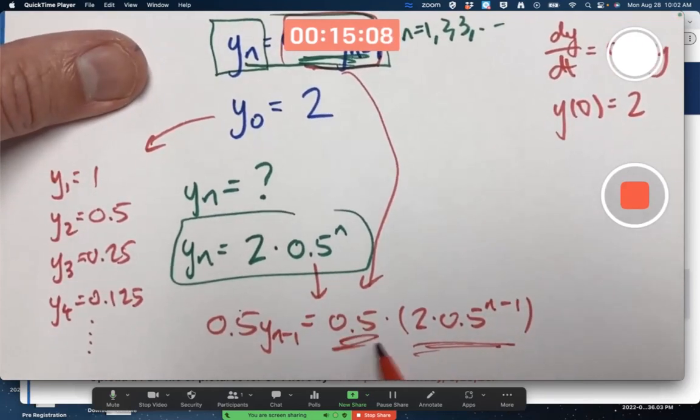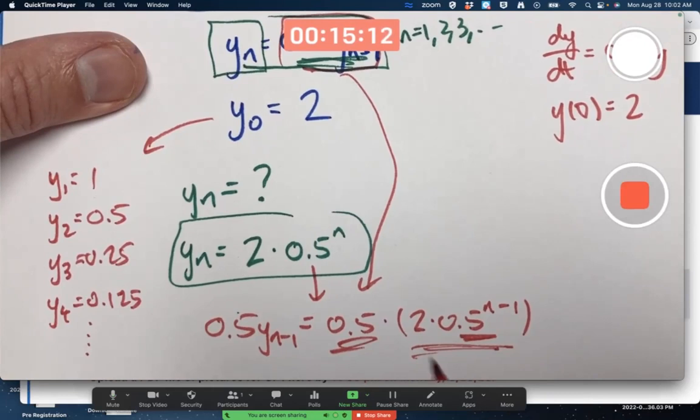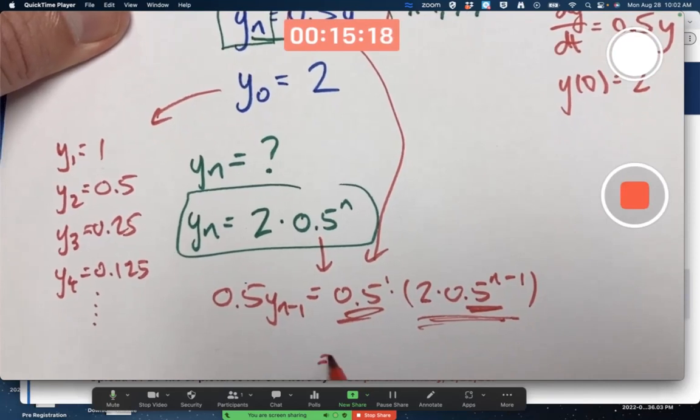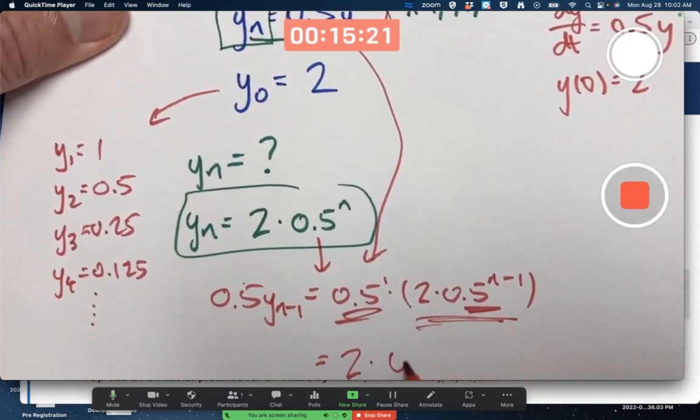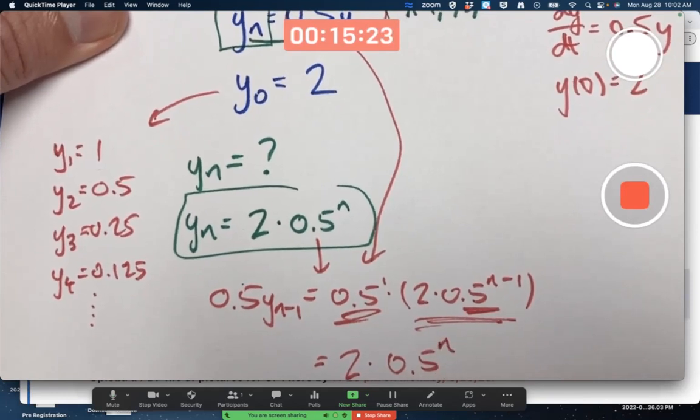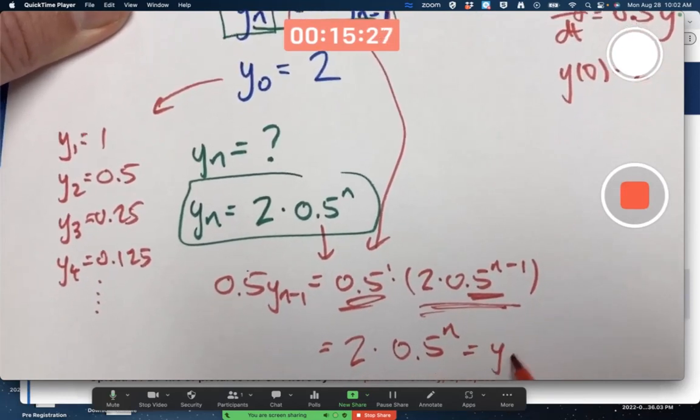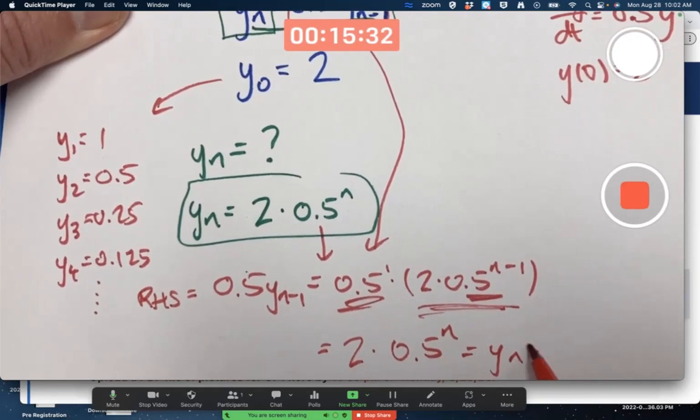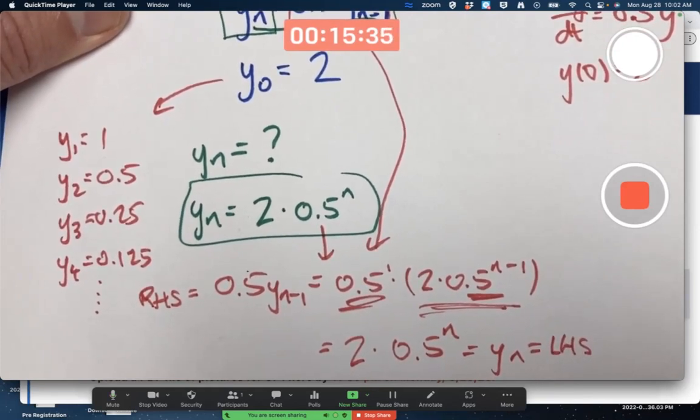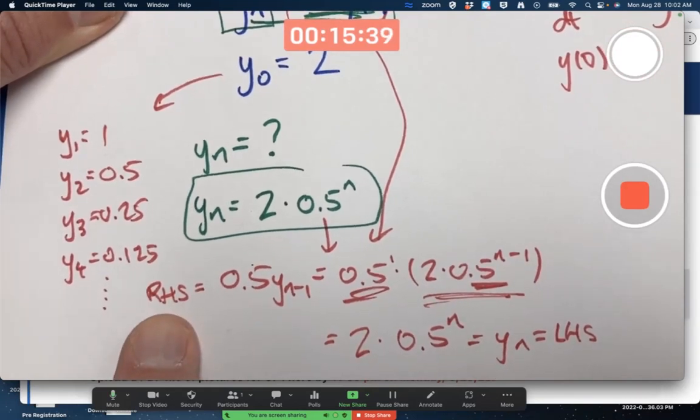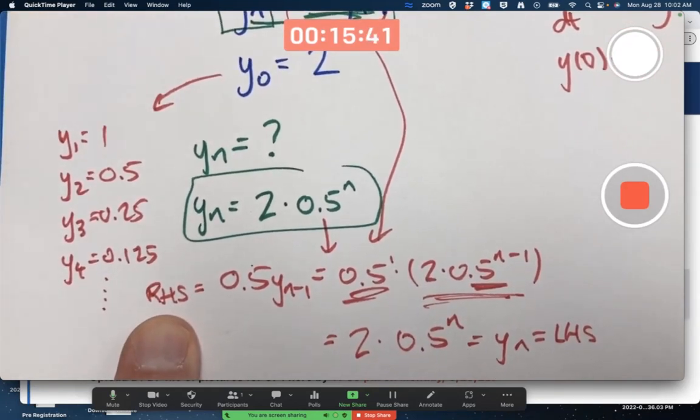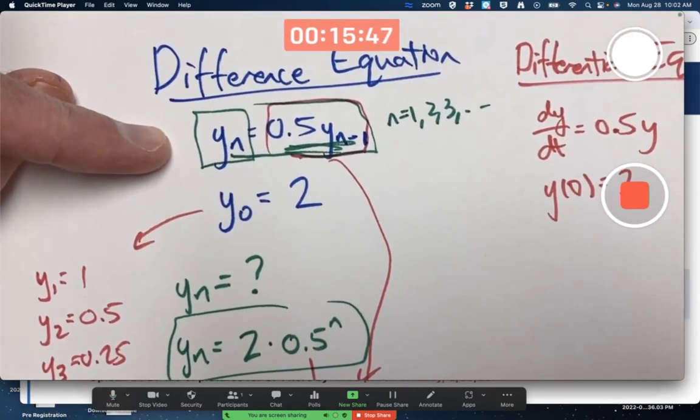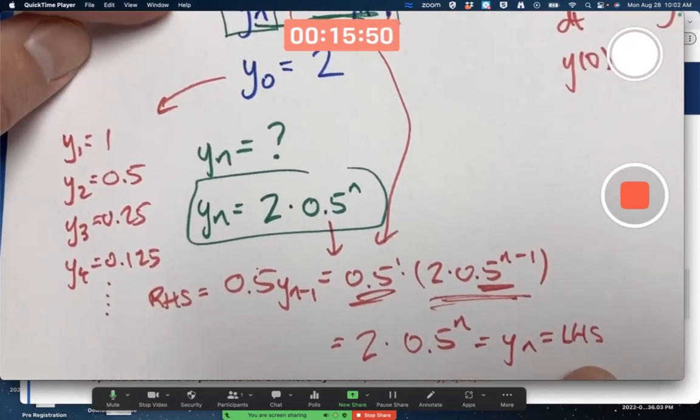Simplify. How? Combine those two things by adding the exponents, right? Got the same base, different exponents. You got to add the exponents. Keep the two as is. 1 plus n minus 1 is n. Hey, that's y_n. We're done. The right-hand side of the difference equation ends up equaling the left-hand side of the difference equation. Right-hand side of the difference equation, not the right-hand side of this line of equations. I mean the right-hand side of this. Equals the left-hand side and it doesn't matter what n is.